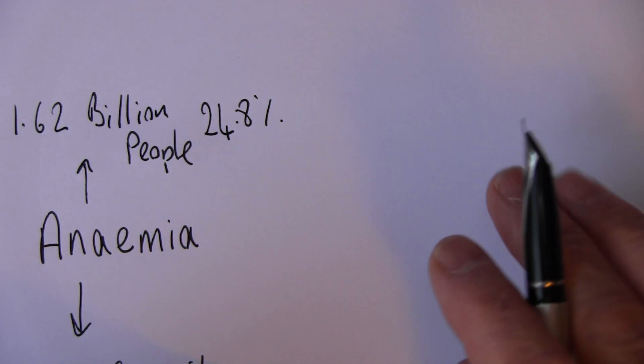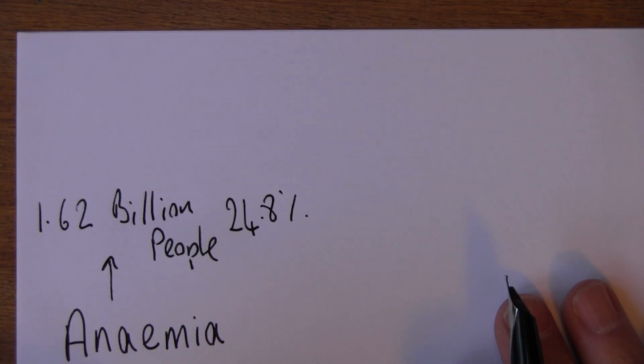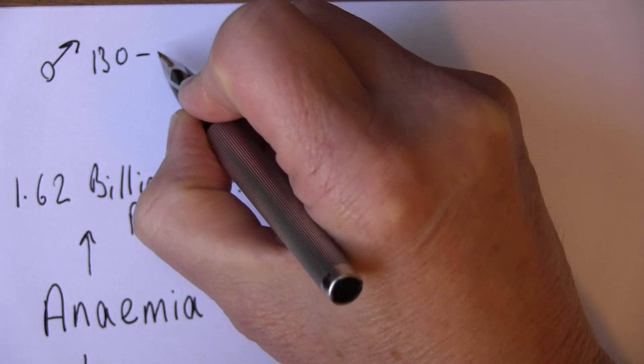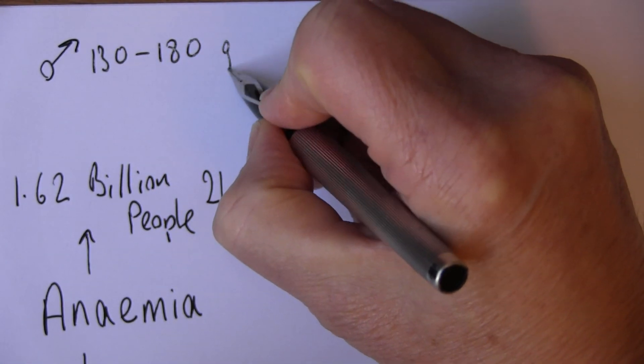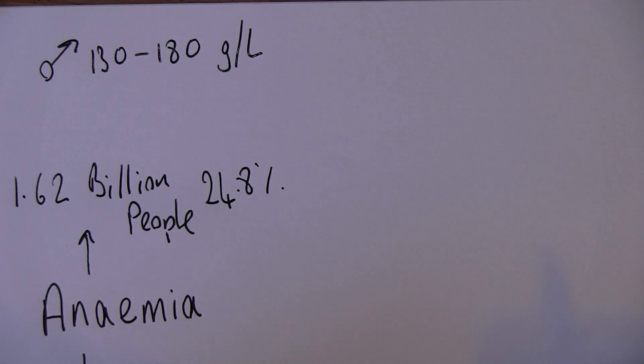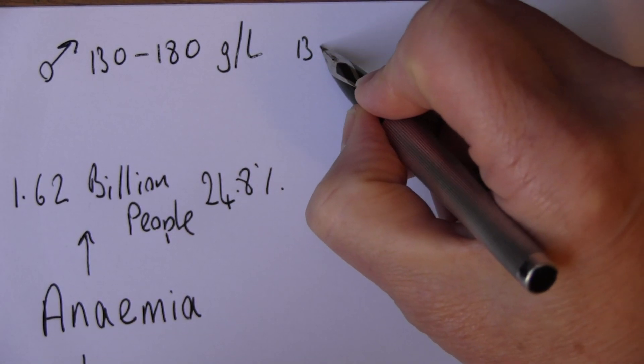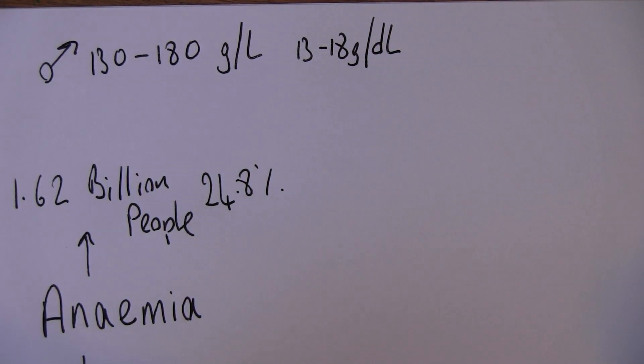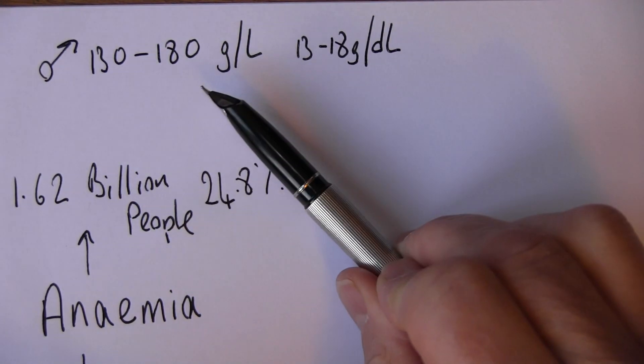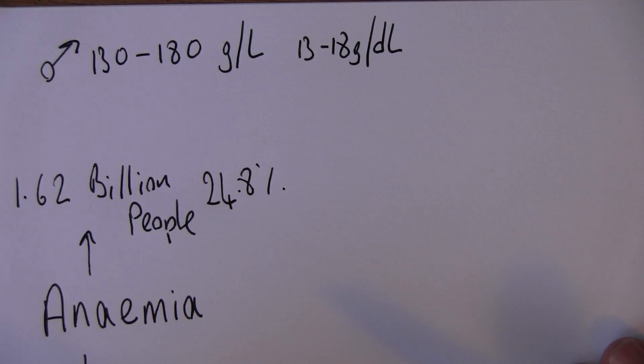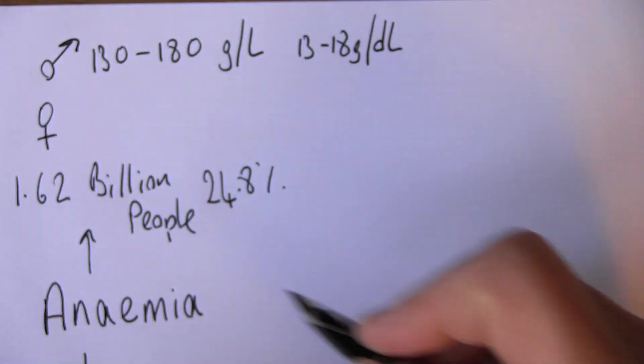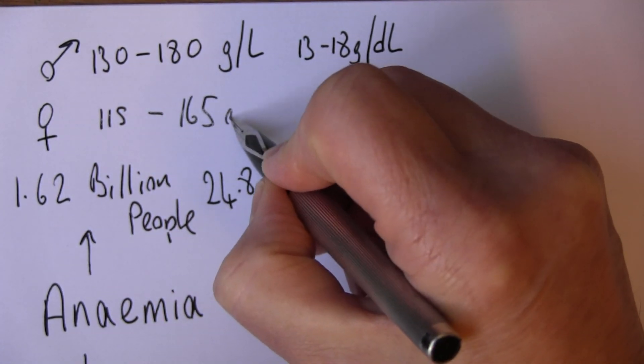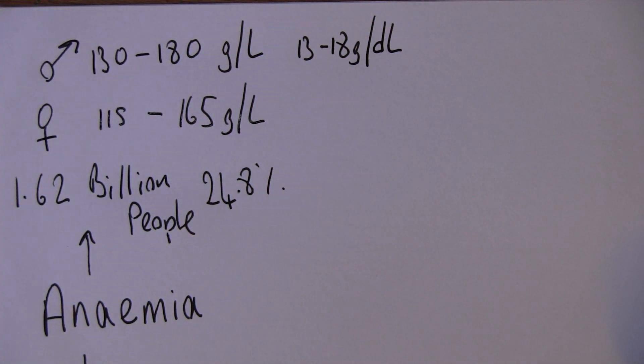It's useful to think about what normal hemoglobin is. In men, normal hemoglobin is 130 to 180 grams per liter, or 13 to 18 grams per deciliter. In the UK we're using grams per liter now. In women, it tends to be a bit lower, so 115 to 165 grams per liter would be an acceptable range.